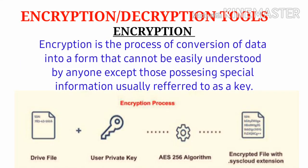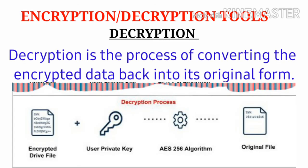Encryption and Decryption tools: Encryption is the process of conversion of data into a form that can't be easily understood by anyone except those possessing special information, usually referred to as a key. Decryption is the process of converting the encrypted data back into its original form.